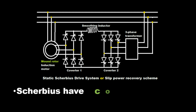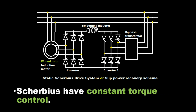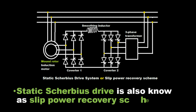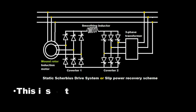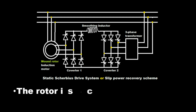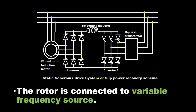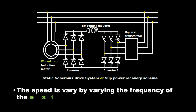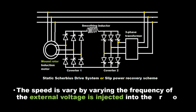The Scarbius Drive provides constant torque control. The Static Scarbius Drive is also known as the slip power recovery scheme. This is a rotor side speed control method, where the rotor is connected to a variable frequency source. Speed is varied by varying the frequency of the external voltage injected into the rotor.